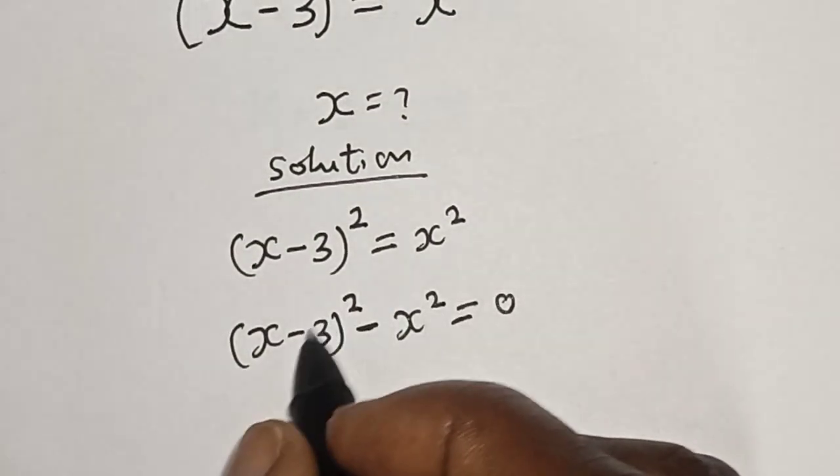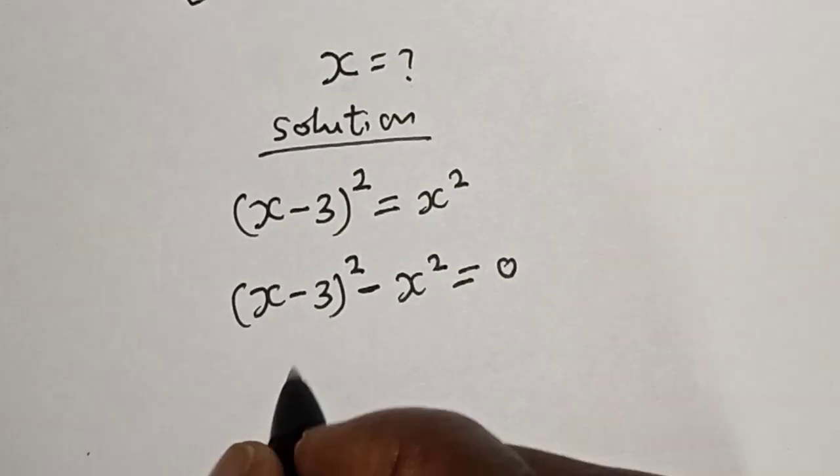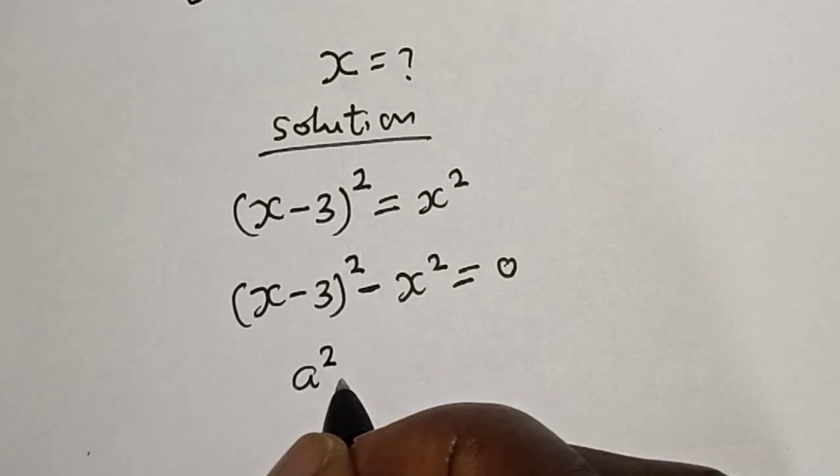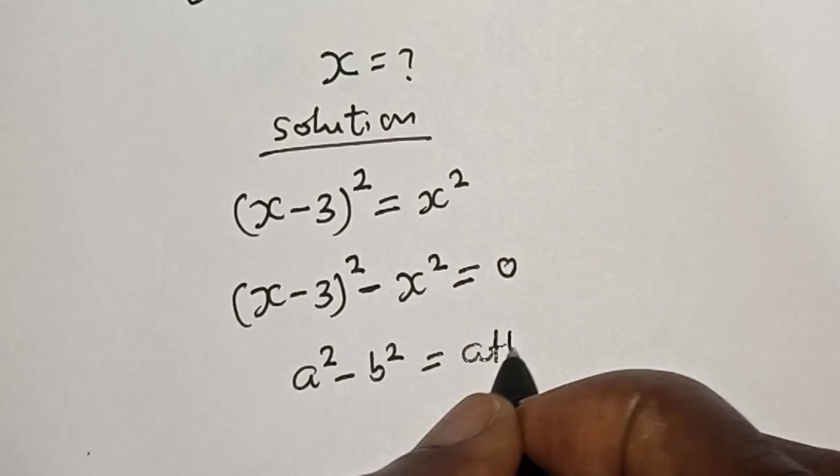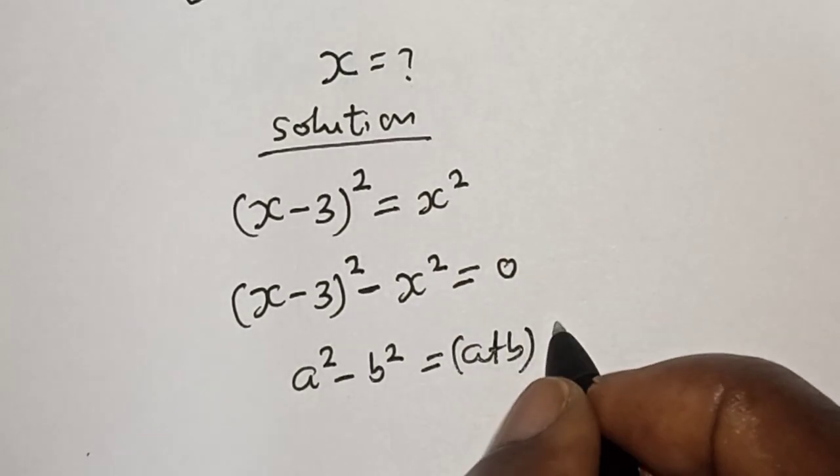Now take note of this exponential rule that a square minus b square is equal to a plus b multiplied by a minus b.